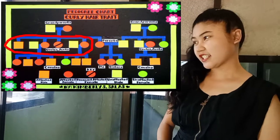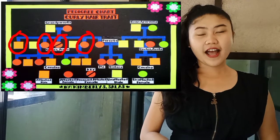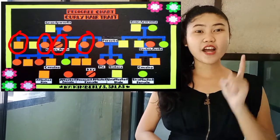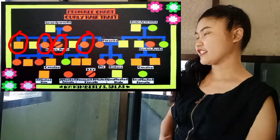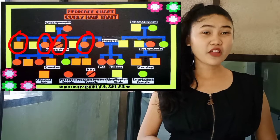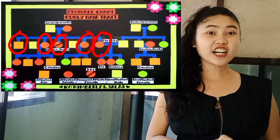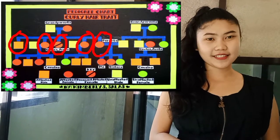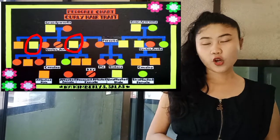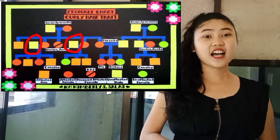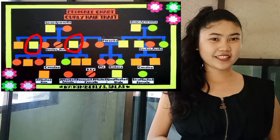These are my uncles and aunts from my mother's side. My mother has four siblings — one male and three females. As we can see, all my mother's siblings, as well as my mother, are affected or possess the curly hair trait. Only my uncles, who are my aunts' husbands, are not affected with the trait.